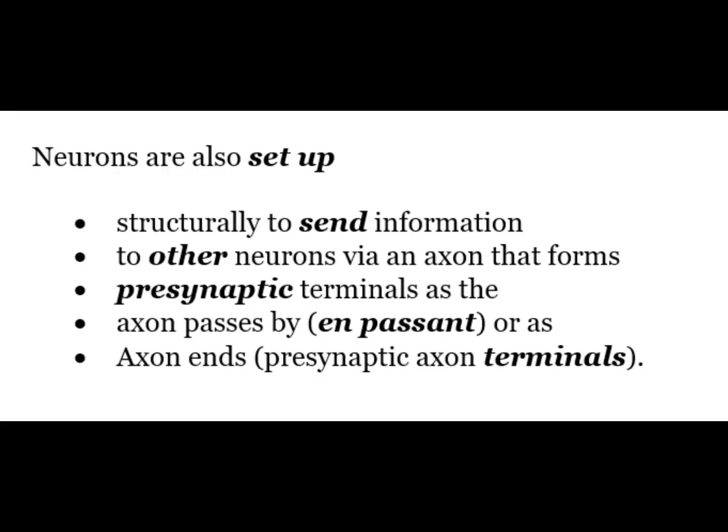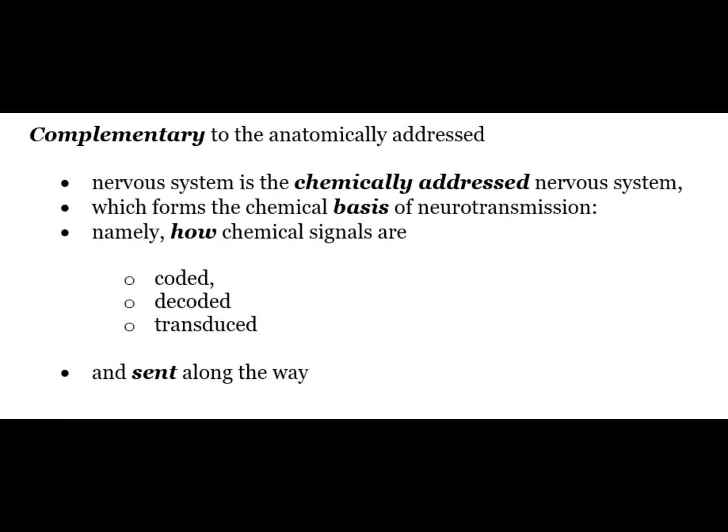Neurons are also set up structurally to send information to other neurons via an exon that forms presynaptic terminals as the exon passes by, such as the en passant rule in chess, or as the exon ends at the presynaptic exon terminals. Complementary to the anatomically addressed nervous system is the chemically addressed nervous system, which forms the chemical basis of neurotransmission — namely how chemical signals are coded, decoded, transduced and sent along the way.